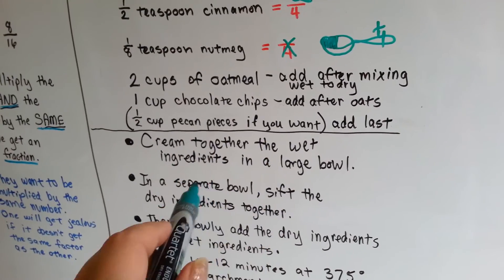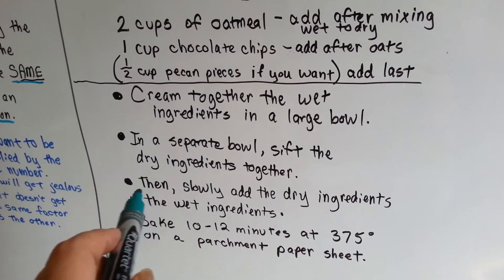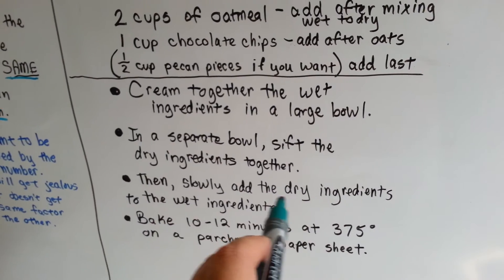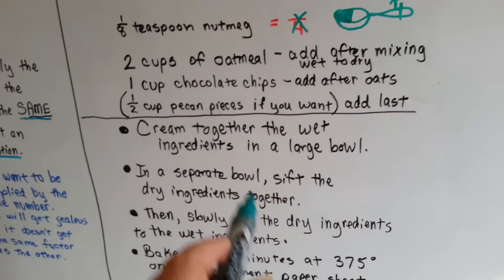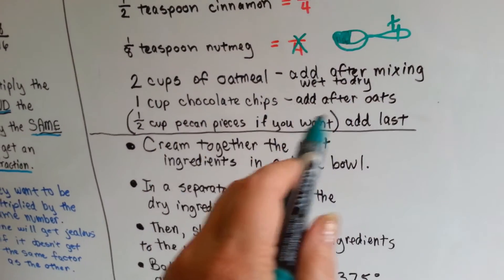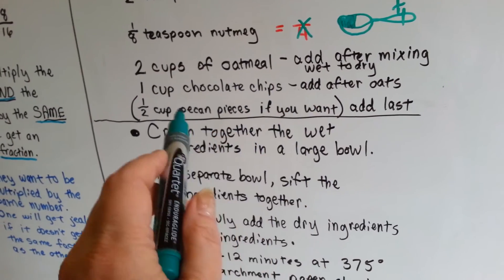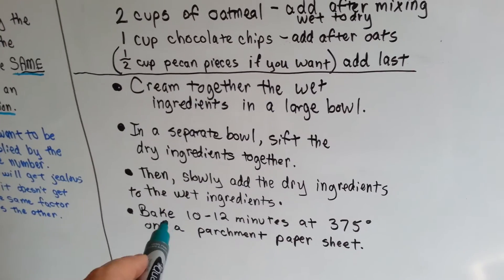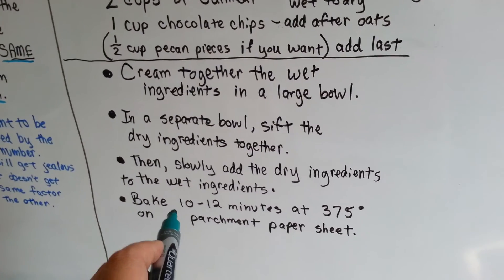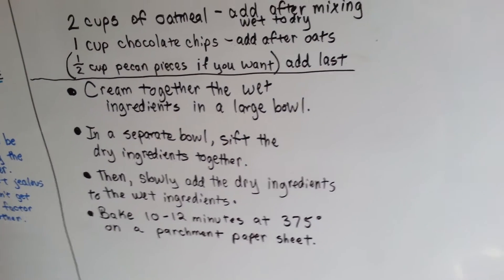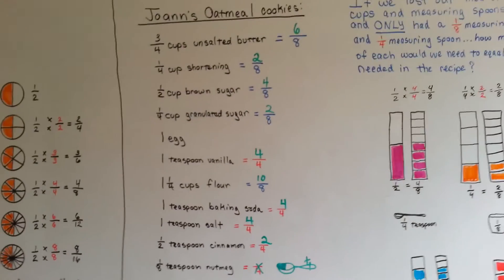Mix all the wet ingredients together. Sift all the dry ingredients into a separate bowl. Slowly add the flour and dry ingredients — like baking powder and such — to the wet stuff. Once you get it all mixed up, add the oatmeal — it's going to be real thick. Stir in some chocolate chips, which will also be thick and hard to stir, and add nuts if you want. Take spoonfuls, plop them on the parchment paper however big you want your cookies, and bake for 10 to 12 minutes at 375. You'll have some delicious Joanne's recipe oatmeal cookies.